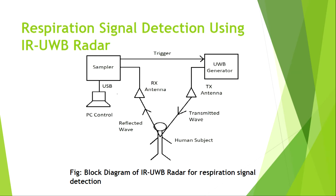This is the block diagram of our respiration signal detection system. We use a PC to control it, and all other components are built into the radar. The sampler triggers the ultrawide band generator, the transmitting antenna, and the receiving antenna. We transmit a signal and the person's breathing is detected through the receiver antenna, allowing us to detect displacement changes indicating human activity.